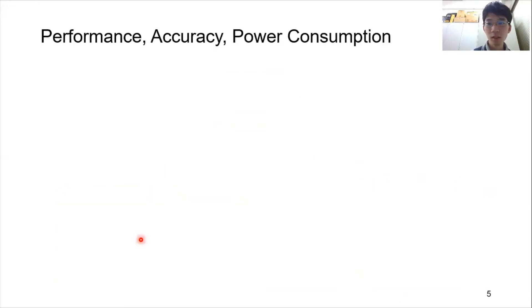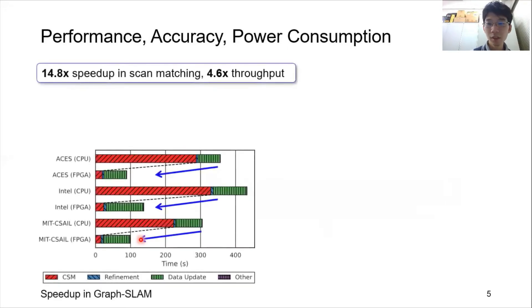We present some of the evaluations. Our FPGA accelerator achieved up to a 14.8 times speed-up in scan matching and up to 4.6 times improvement in throughput. We can see the clear difference in the execution time.